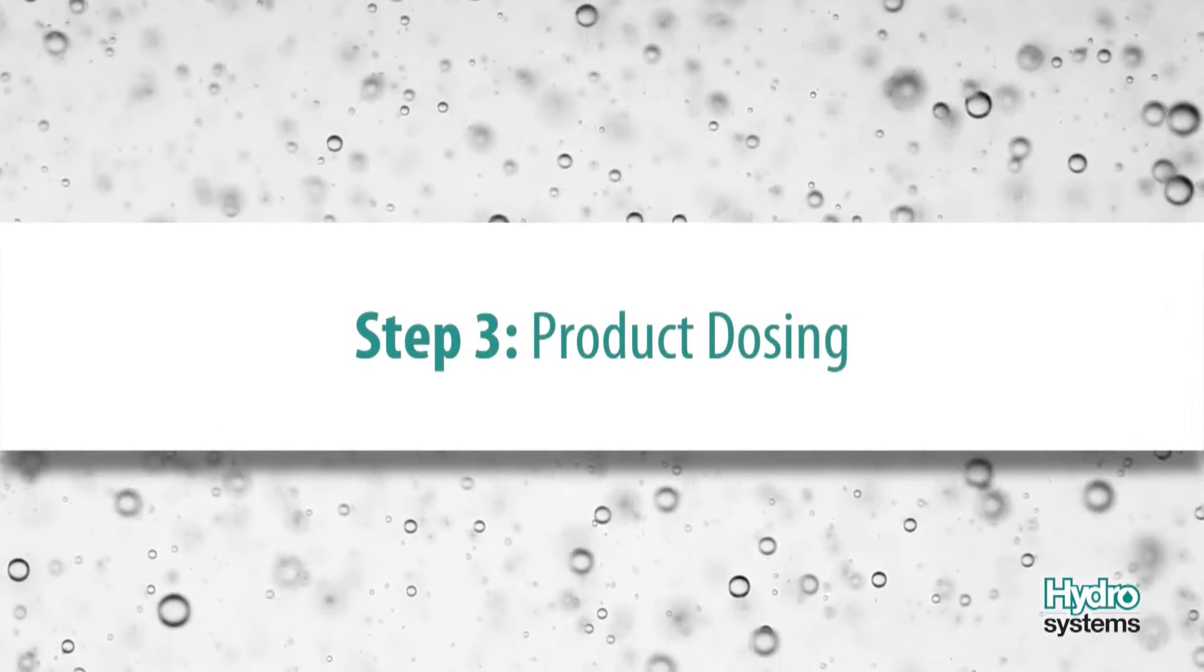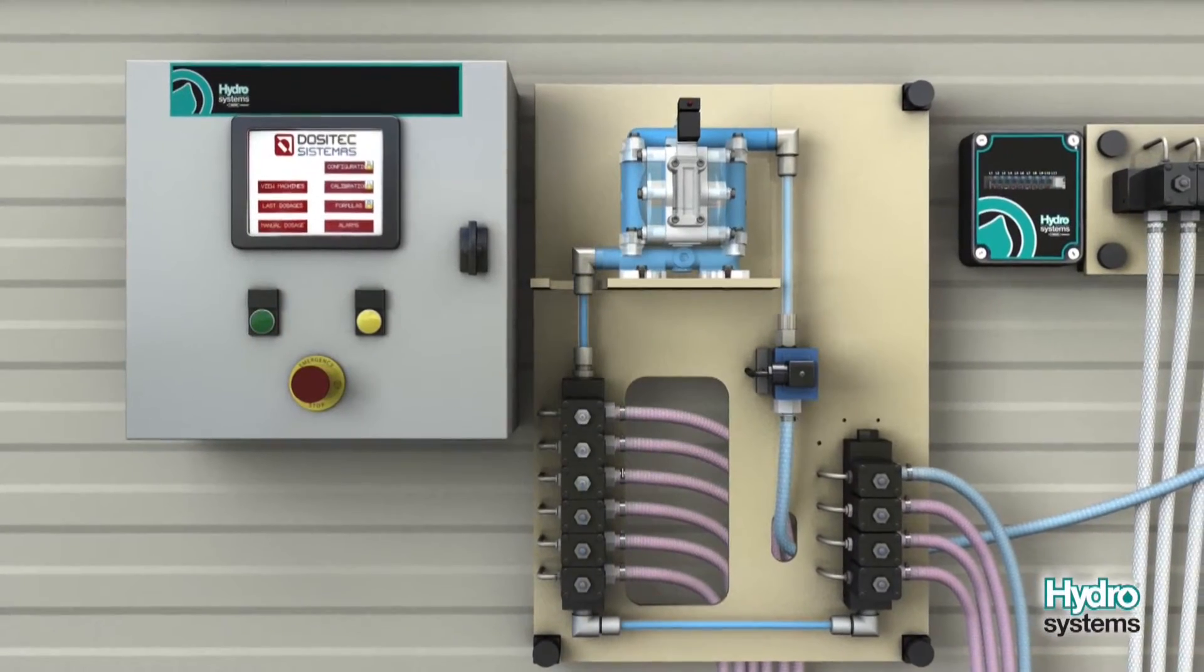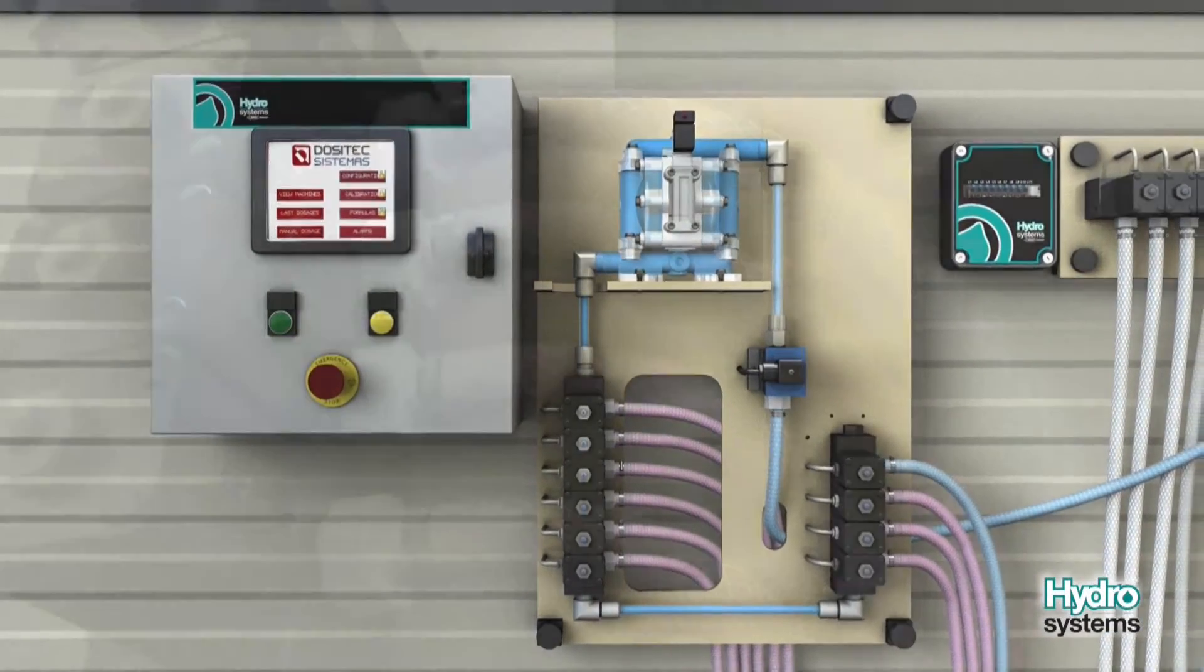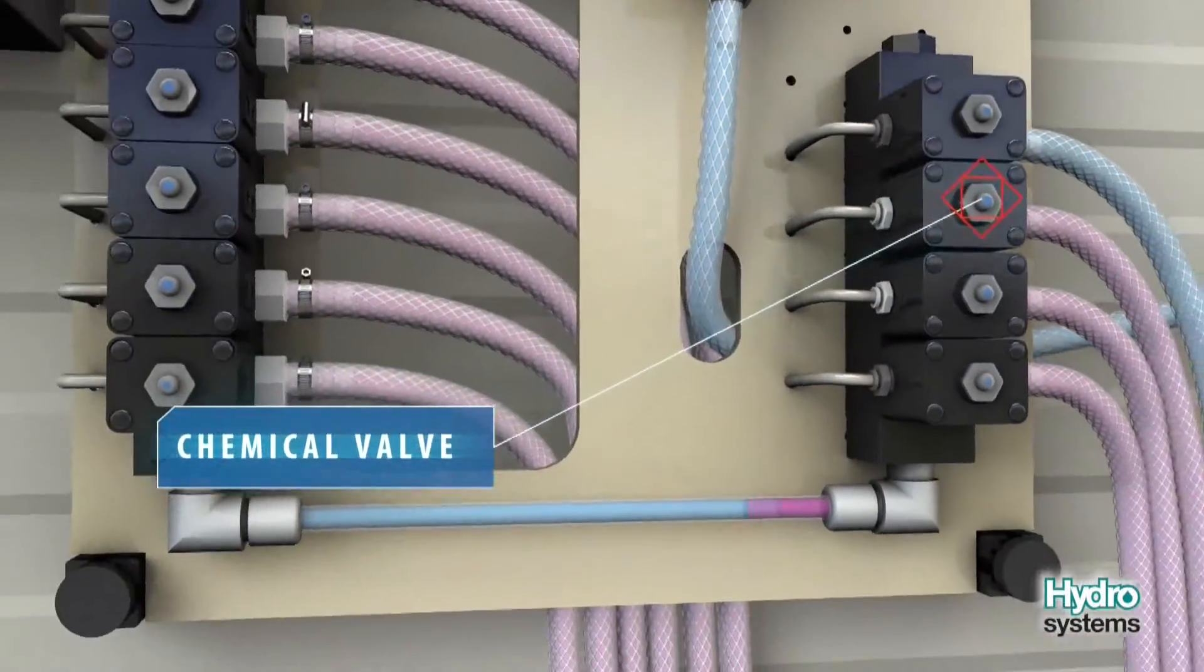Step 3: Product Dosing. With a successful water test, it is time to send chemical through the dosing channel. The chemical valve is opened at the collector and the pump is activated.